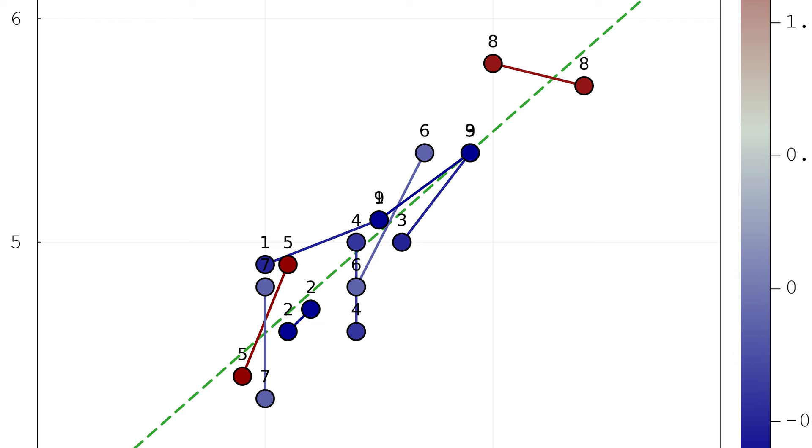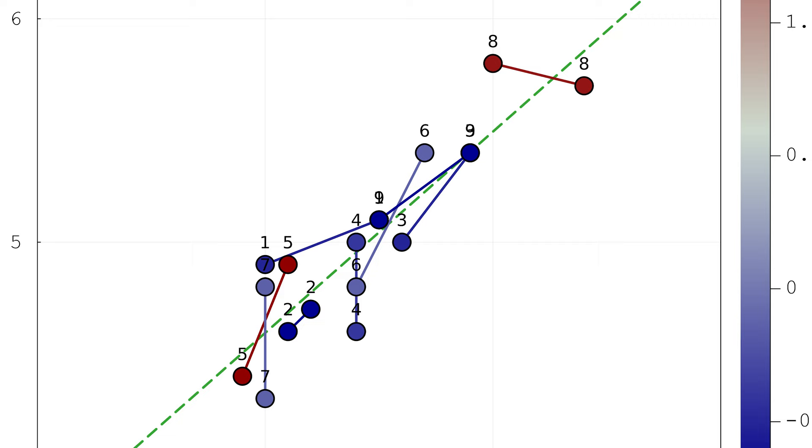Here I prepared a visualization of all marginal contributions for the nine-seller example. You can see the marginal contributions as dots and their distribution as violin plots. Interestingly, the distribution of all marginal contributions for each player is very close to zero — as we discussed when testing the leave-one-out approach. Once we have a lot of other datasets, the contribution of each single data point is not important. Each player has just a few significant contributions, and we should probably focus on these coalitions to estimate the true value of data provided by each player.